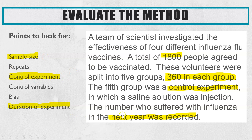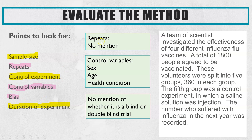Regarding duration of the experiment, they have given us information — they said that the next year they're going to see how effective it is when participants are exposed to the next year's influenza virus. However, they haven't said anything about whether they've repeated this year on year, so that's a negative. They also haven't stated anything about the people in each group — we know there are 360 but we don't know if they are male or female, older or younger, or whether they have any previous health conditions which could affect how well the vaccine works.